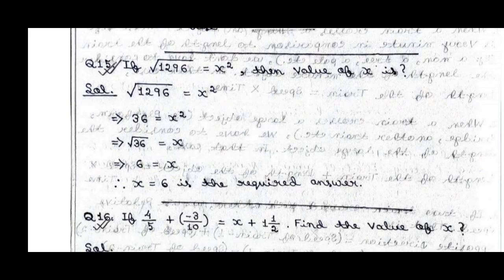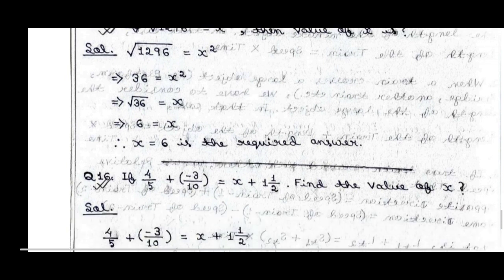Next question: if √196 equals x squared, find the value of x. Solving gives x squared equals 196, which means x equals 6 is the required answer.